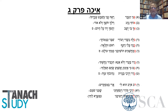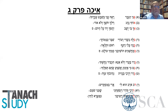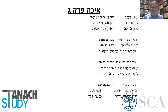Then we have Perek Gimel. Chapter 3 is the most unique, in that it's not 22 verses like the rest of the chapters, but actually 66 verses. Each three verses begin with the corresponding alphabetic letter. So you have three verses starting with Aleph, three verses starting with Bet, three verses with Gimel, and so on until the end of the chapter.